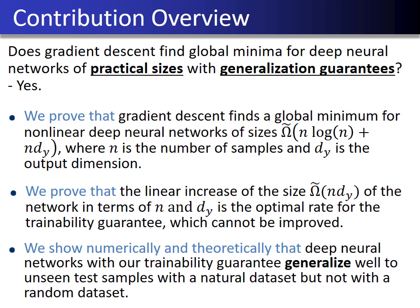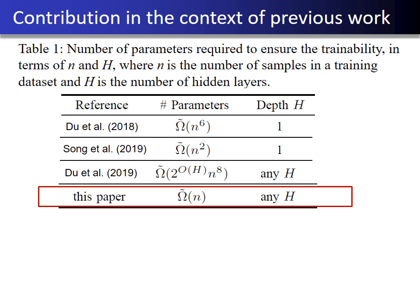Finally, we show numerically and theoretically that deep neural networks with our trainability guarantee generalize well to unseen test samples with a natural dataset, but not with a dataset of randomly corrupted labels with a certain probability. The contribution of this paper can also be seen in the context of previous work. There are previous papers that prove trainability, but they require a significantly large number of parameters. The table shows the number of parameters required to ensure trainability in terms of n and h, where n is the number of training samples and h is the number of hidden layers. Our paper significantly improves the required number of parameters to ensure trainability.